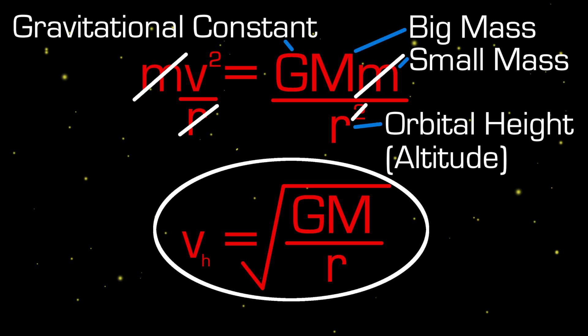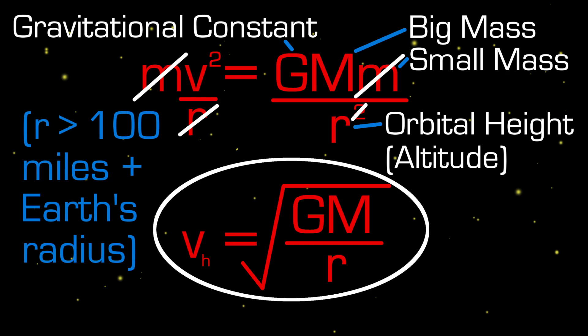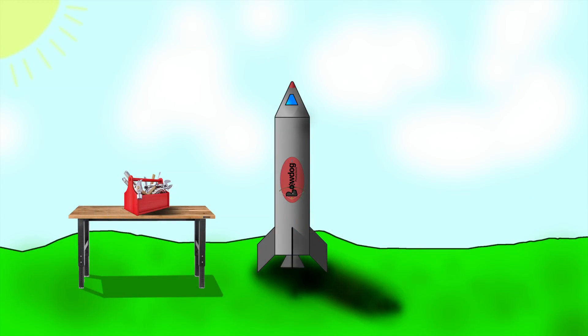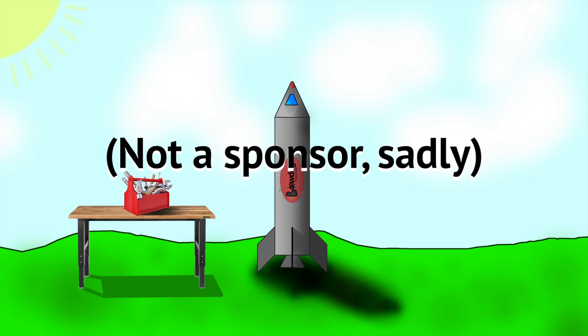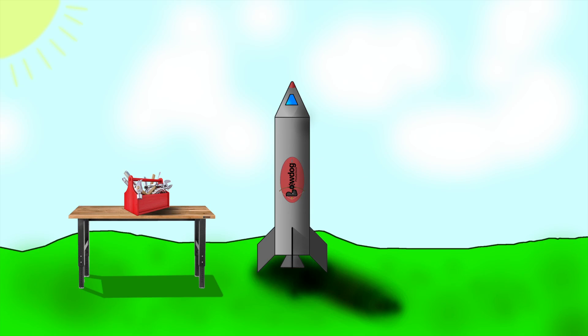Now the last thing we want is to come crashing down on Earth's nonsense, so let's make sure our orbital height is above the atmosphere. Next, we need to build or buy a rocket. I would recommend SpaceX for this — good bang for your buck. Plus it's good to support private industry whenever possible.